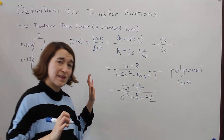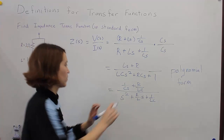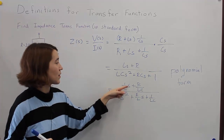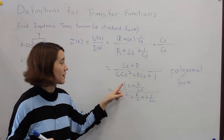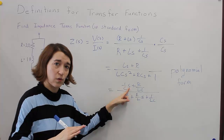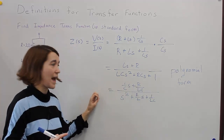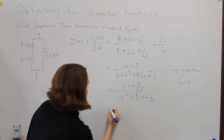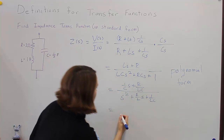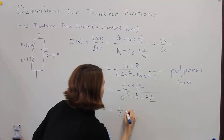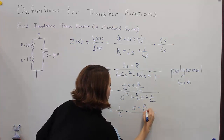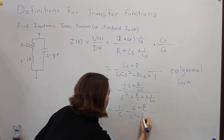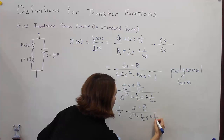We also need the numerator's highest-order term to be one. So we factor out one over C from the numerator, moving it out front as a multiplier of the entire fraction. That leaves us with S plus R over L in the numerator, over S squared plus R over L times S plus one over LC.